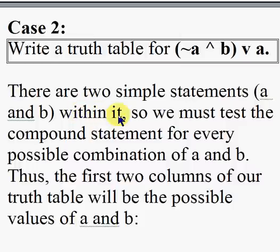There are two simple statements, a and b, within it, so we must test the compound statement for every possible combination of a and b. Thus, the first two columns of our truth table will be the possible values of a and b.